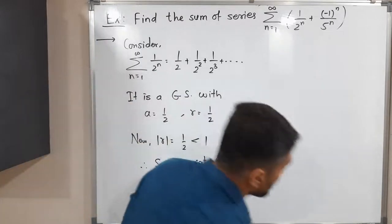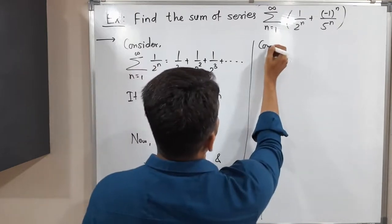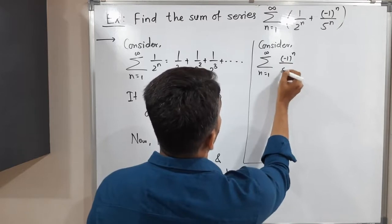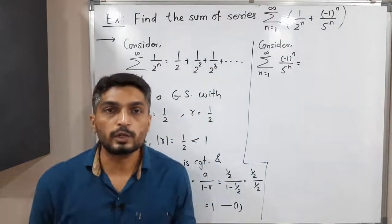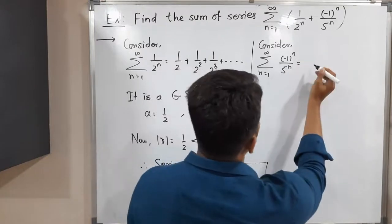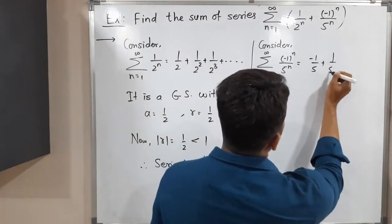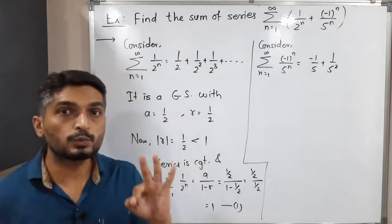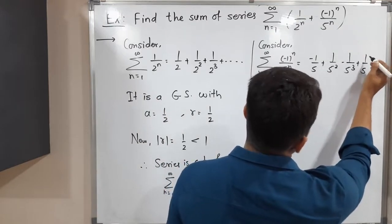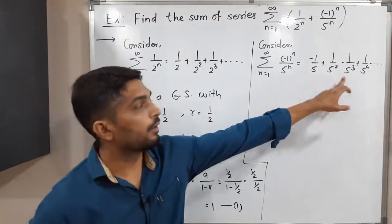Now let us consider the second series: summation n running from 1 to infinity of (-1)^n / 5^n. Putting n = 1, 2, 3, 4 and so on, we get: -1/5 + 1/5² - 1/5³ + 1/5⁴ and so on. We have alternating plus and minus signs, and the powers of 5 increase. The minus and plus signs alternate because (-1)^n alternates in sign.